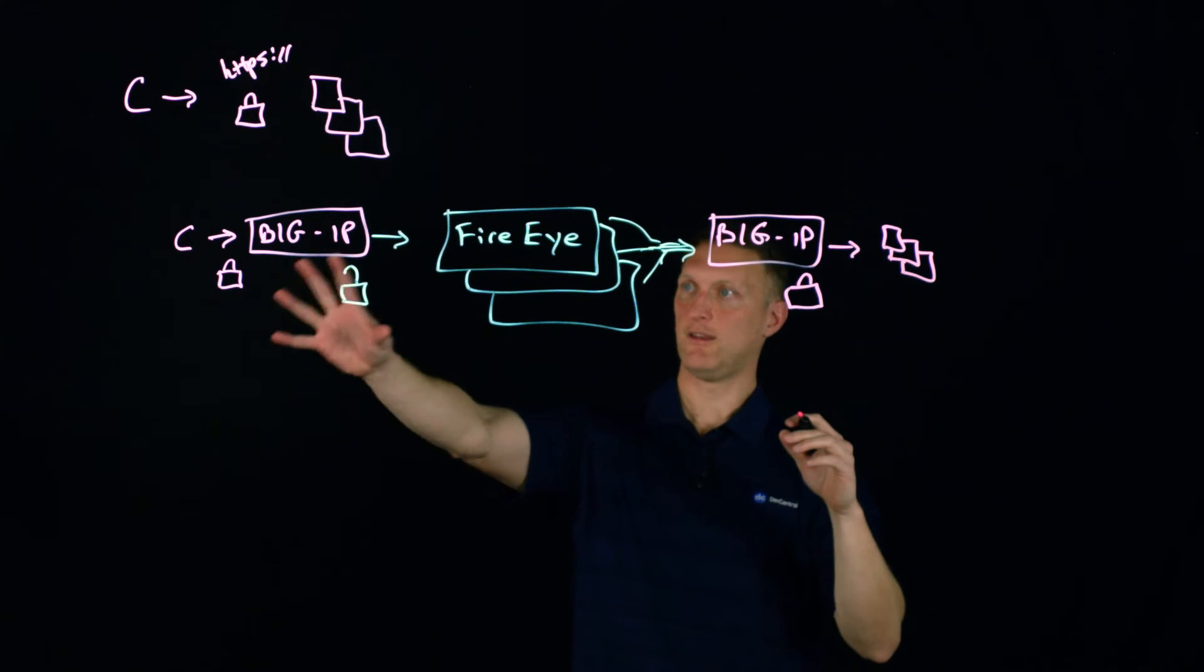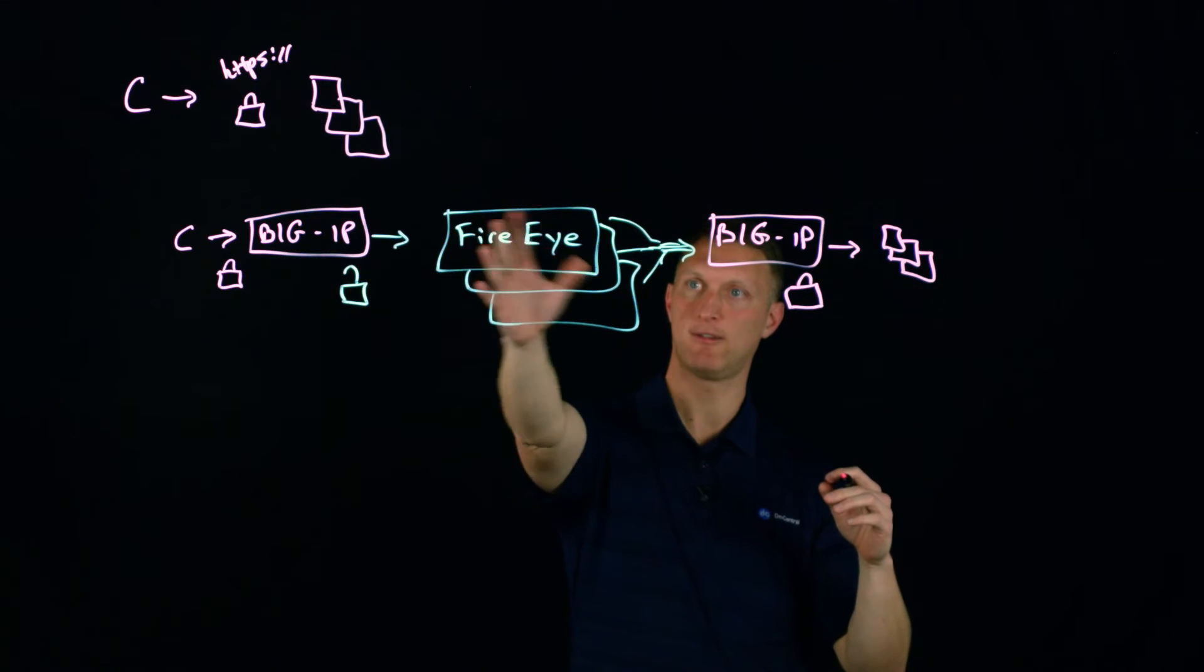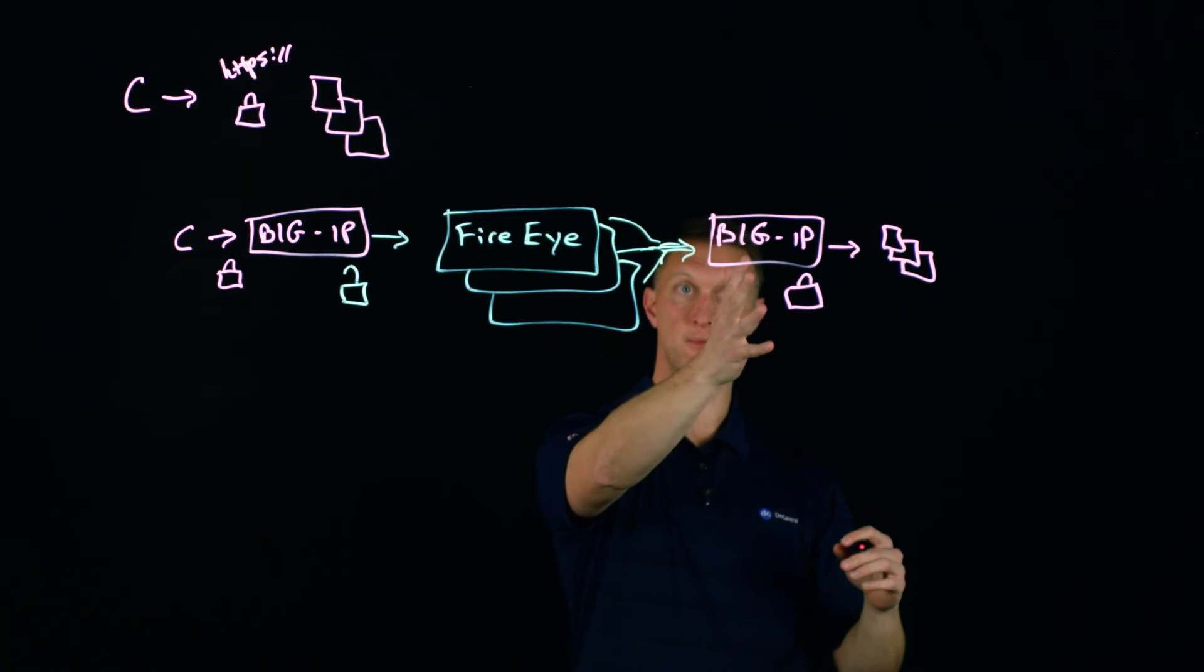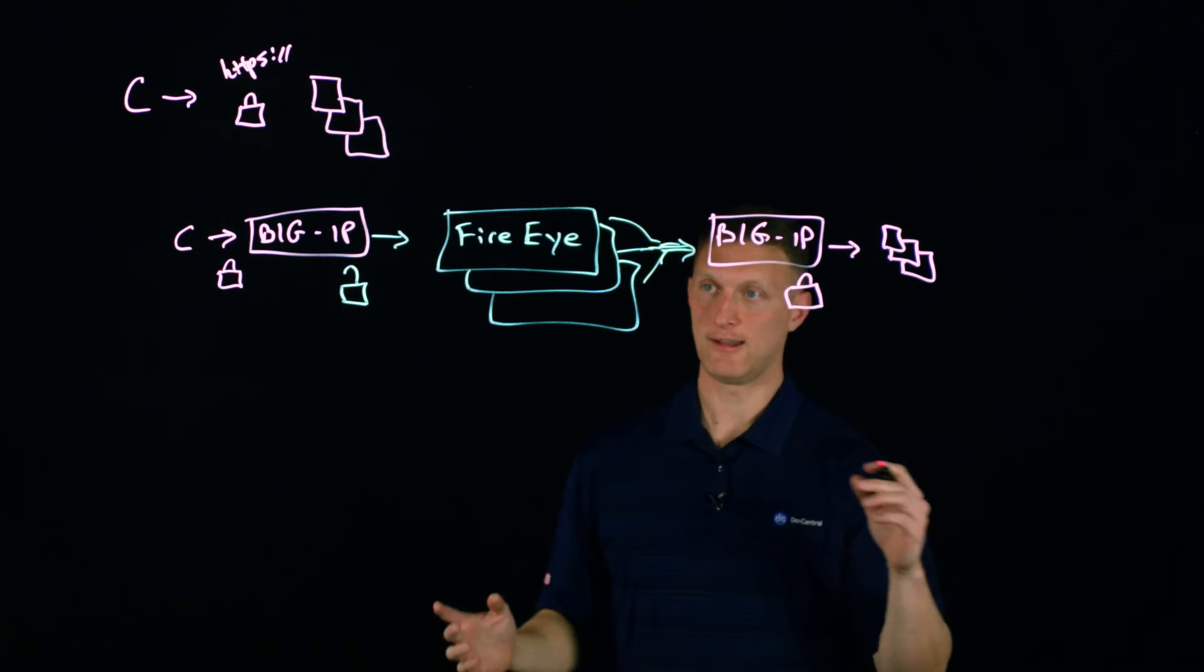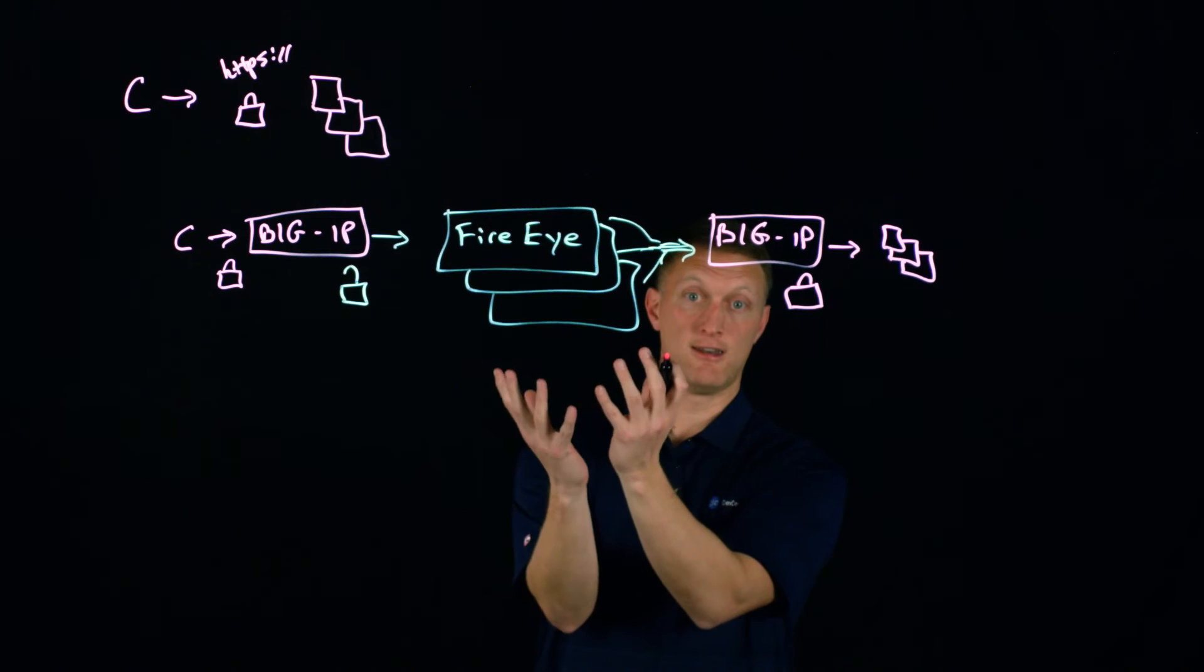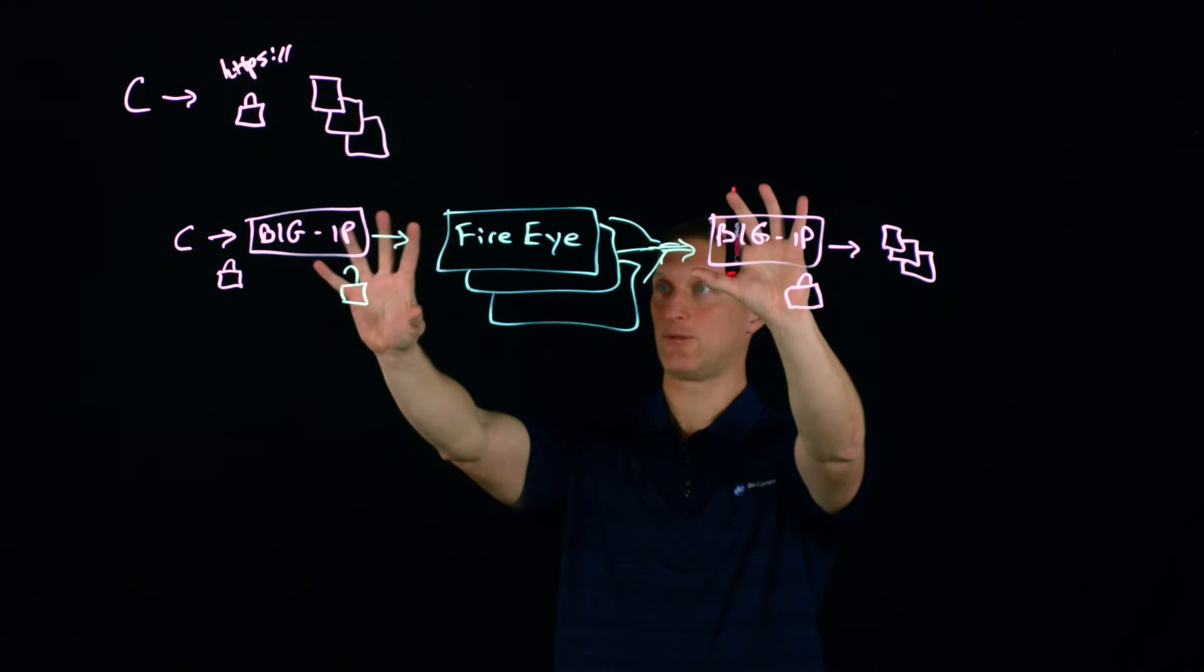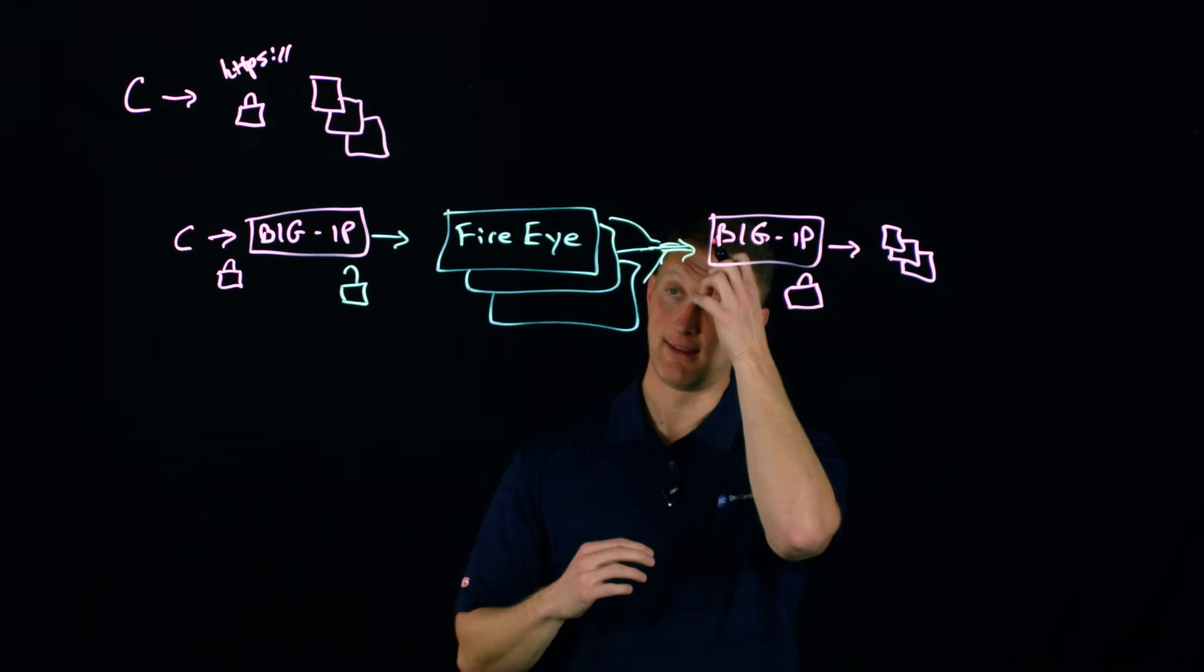You've got the client coming in encrypted to the BigIP, the decryption happens, goes to the FireEye, it does all of its inspection, and then it comes back to another BigIP, re-encrypts and back to your backend web servers. The FireEye can know, hey, this is good traffic or bad. That is what we would call a two BigIP solution with the FireEye in line like that.